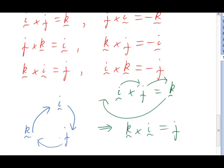On the other hand, if we go around the circle in the anti-clockwise direction, then we introduce a minus sign. So j cross i equals negative k, i cross k equals negative j, and so on. I hope that helps you remember these various cross products.